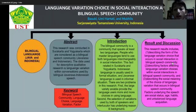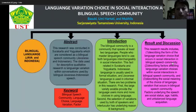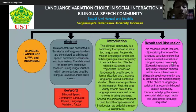The second result is describing the factors affecting language variation choices within social interaction in a bilingual speech community. The factors are: social status, habit, age, and unbalanced language acquisition. The third result is describing the social meaning of language variation choice. The social meaning is that using Indonesian or Java Krama with older people makes one appear polite and socially competent.